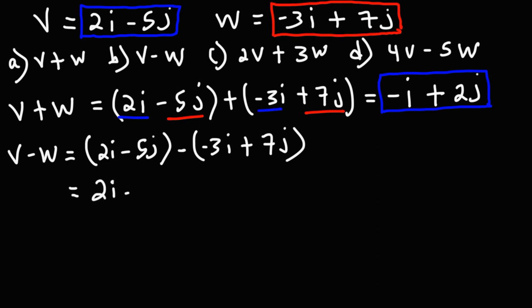So this is 2i minus 5j, and then negative times negative 3i becomes positive 3i, and negative times 7j becomes negative 7j. Now let's combine like terms.